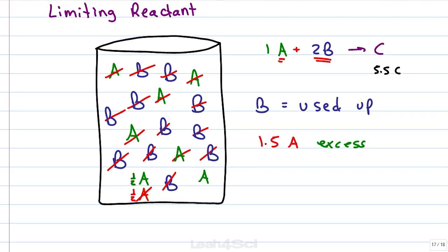Let's work through this again but this time numerically. If I have A reacting with 2B to give me C and my starting reagents include 7 molecules of A and 11 molecules of B, even though it looks like I have less of A and it looks like I should run out of A first,